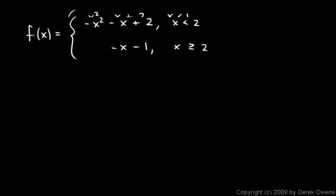Here's another piecewise function. f of x is negative x squared minus x plus 2 if x is less than 2, and negative x minus 1 if x is greater than or equal to 2.